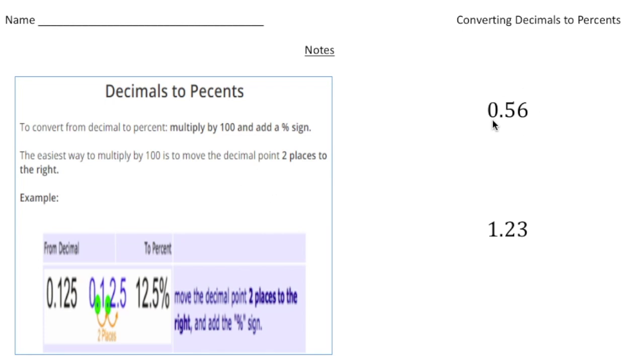Here we have the decimal 0.56. All you do is take the decimal and move two spots to the right, so that gives us 56, and then you add a percent sign, so it's 56 percent.